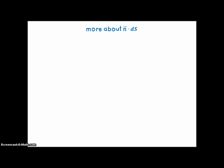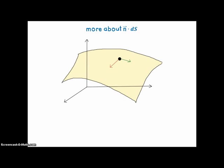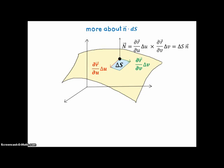So more about N dot dS, where S is the surface. Here we have a surface, and we have our two tangent vectors, which bound a parallelogram, which would approximate the change along the surface. One of the vectors is the partial derivative of R with respect to U times the change in U, and the other one is the partial derivative of R with respect to V times the change in V, where we have a two-dimensional parametrization of the surface. Now, if we have a normal vector there, it's going to be the cross product of these two vectors, and that is going to have the same value in length as the area of the parallelogram, so it's going to be the area of the parallelogram times the unit normal vector.